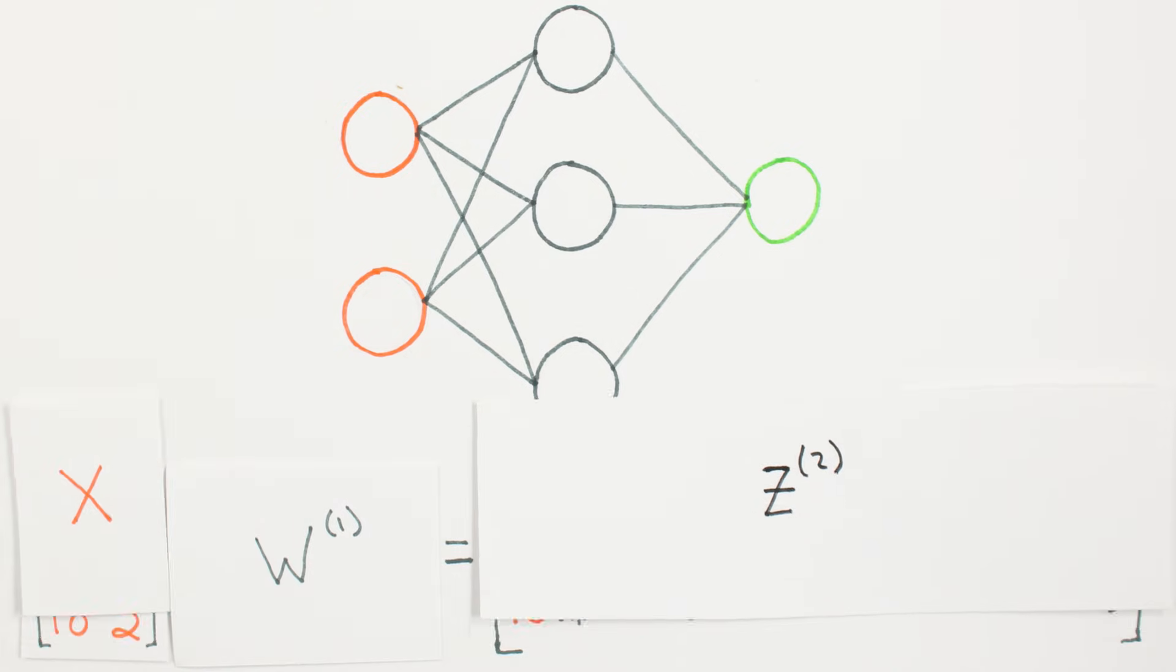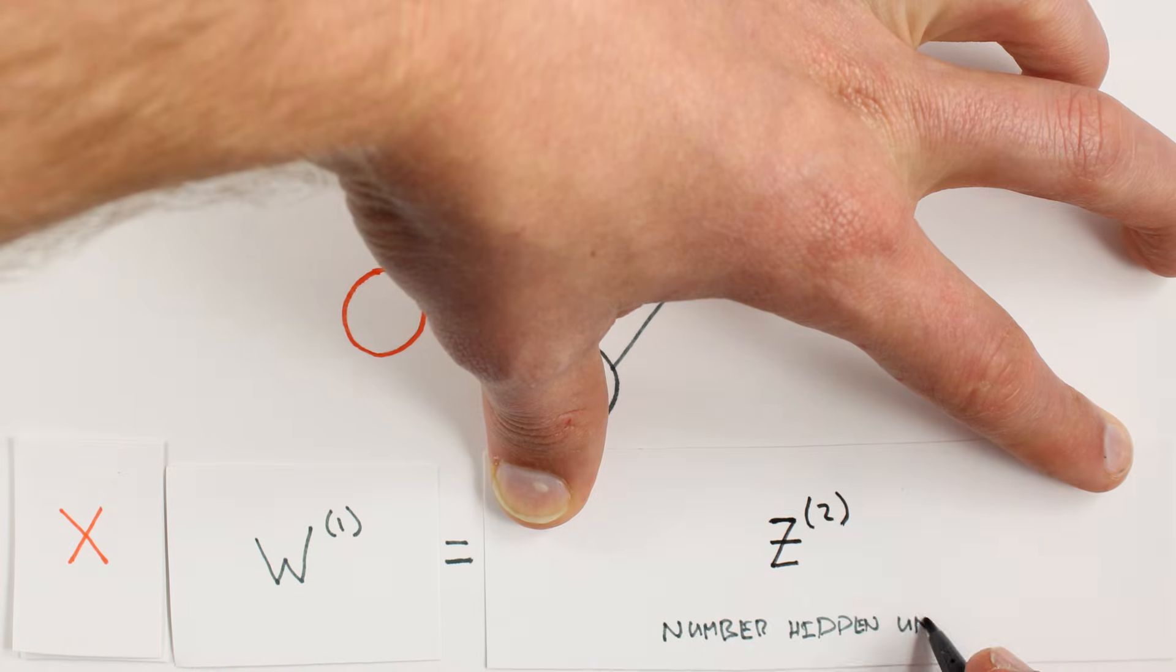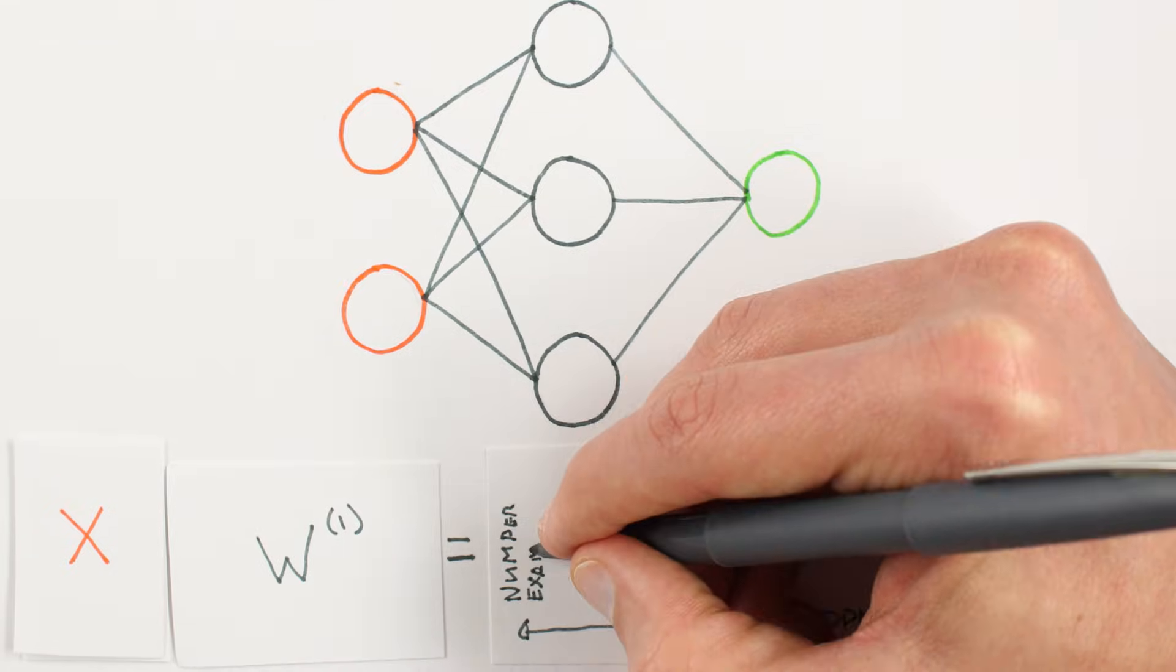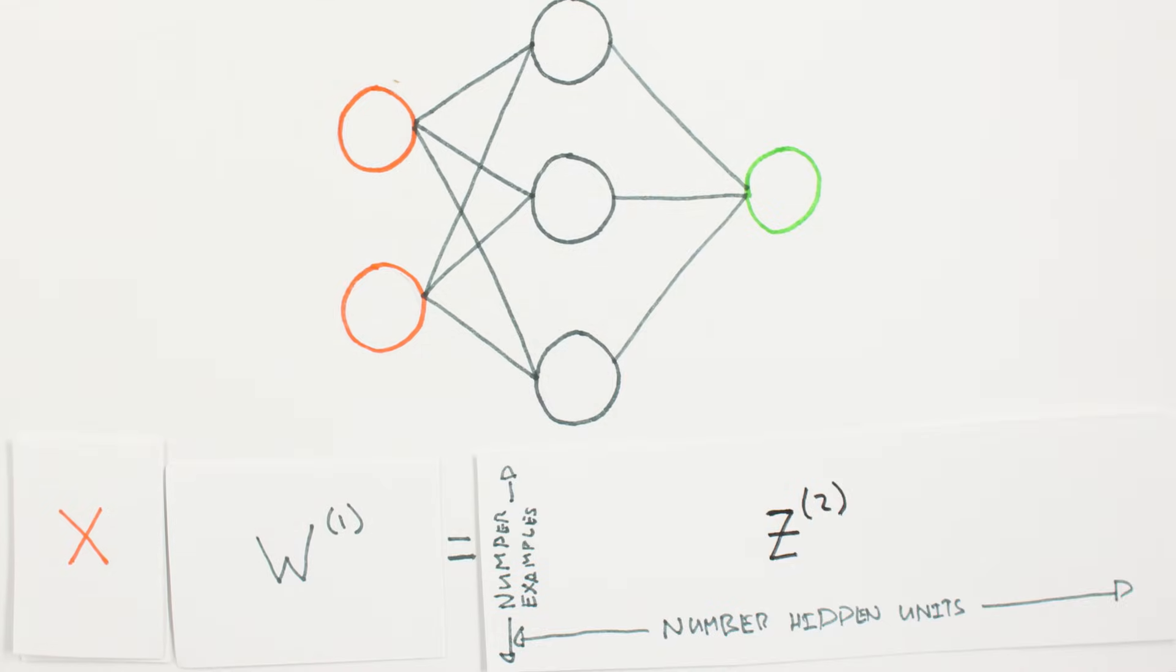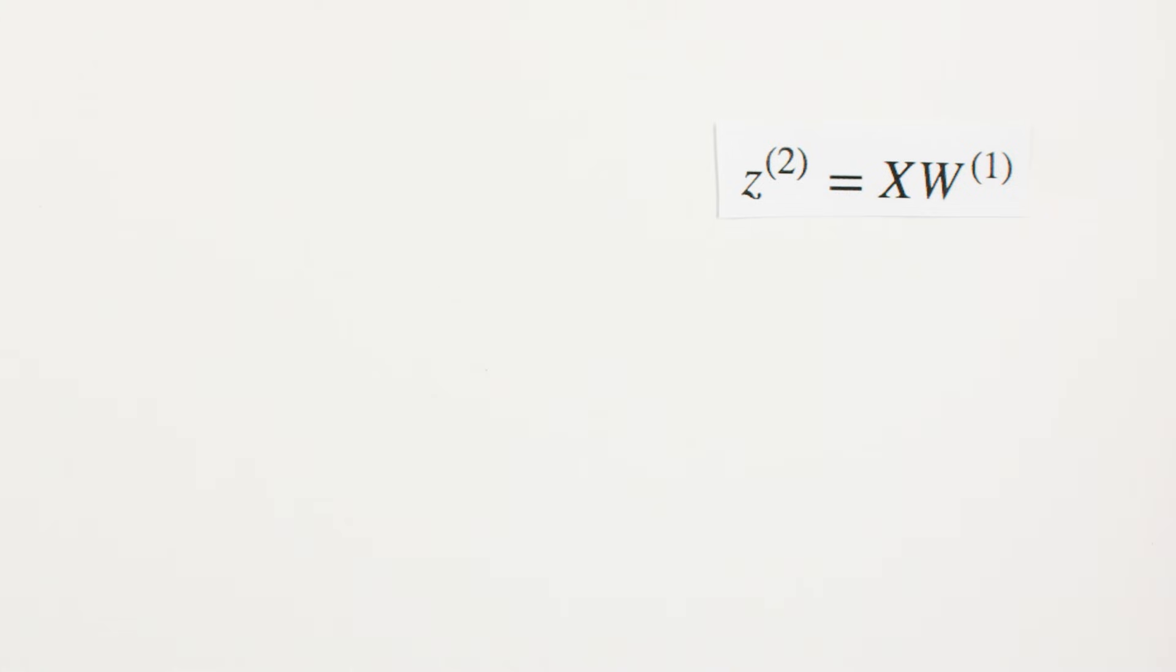Notice that each entry in Z is a sum of weighted inputs to each neuron. Z is of size three by three, one row for each example, and one column for each hidden unit. We now have our first official formula, Z2 is equal to X times W1.